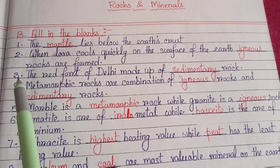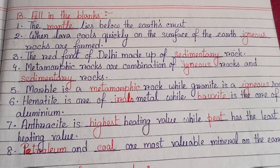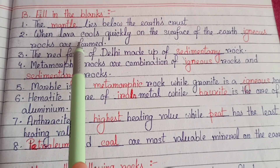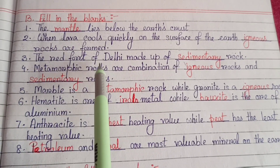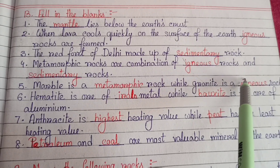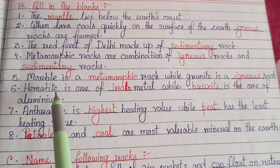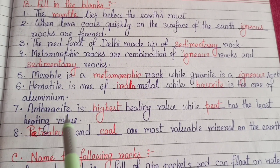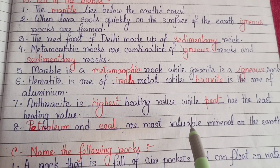Let's start with Objectives, Section B: Fill in the Blanks. Number one: the mantle lies below the Earth's crust. Number two: when lava cools quickly on the surface of the Earth, igneous rocks are formed. Number three: the Red Fort of Delhi is made up of sedimentary rocks. Number four: metamorphic rocks are a combination of igneous rocks and sedimentary rocks. Number five: marble is a metamorphic rock while granite is an igneous rock. Number six: hematite is the ore of iron metal while bauxite is the ore of aluminium. Number seven: anthracite has the highest heating value while peat has the least heating value. Number eight: petroleum and coal are the most valuable minerals on the Earth.